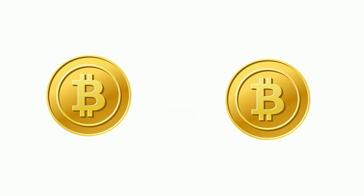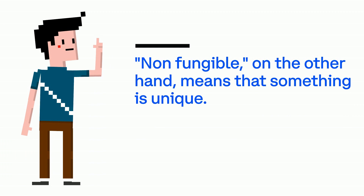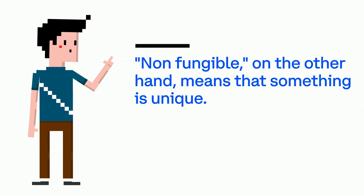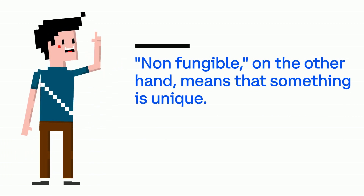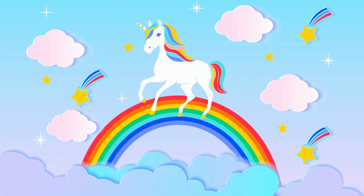Bitcoin and other cryptocurrencies are also Fungible. One Bitcoin is the same as every other Bitcoin. Non-fungible, on the other hand, means that something is unique. There's no exact copy of the item, so it can't be swapped one for one with anything else.